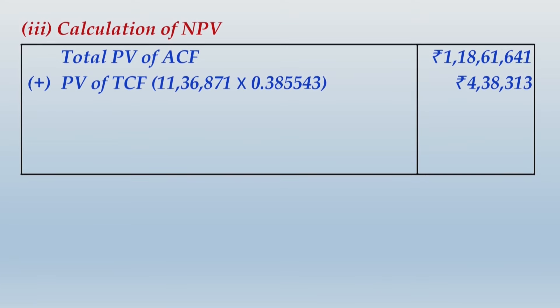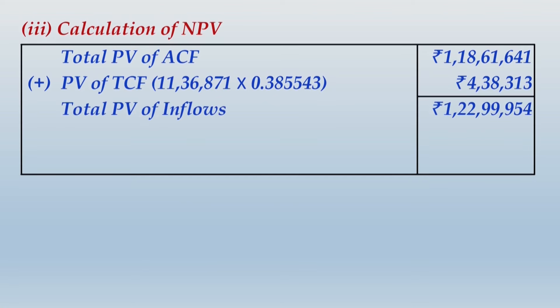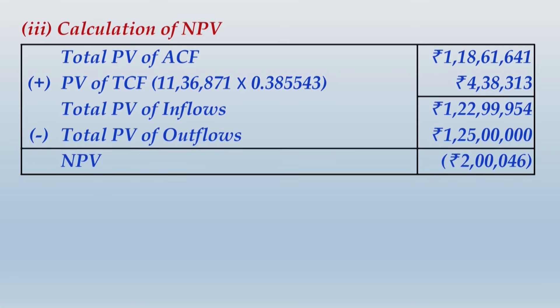Now let us make the last calculation — calculation of NPV. The present value of annual cash flows we have obtained from the earlier working; the present value of terminal cash flow; the aggregate of these two is the total PV of inflows. From that aggregate you subtract the total PV of outflows, and you find that the NPV goes negative. Notice: the same project, the same expected rate of return, but because of the status of the company and the tax implications, the project in one case is a profitable one giving a positive NPV, and in the other case it is a loss-making one giving a negative NPV. Please write up this whole thing — that will be the end of the solution.